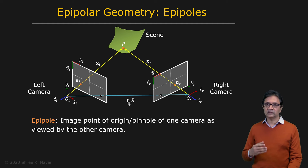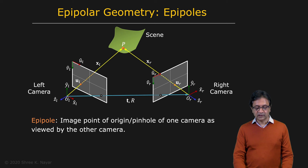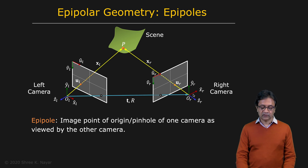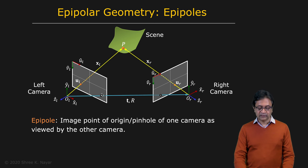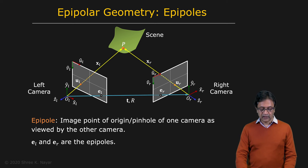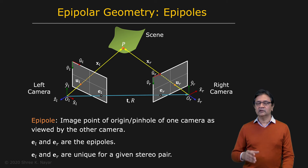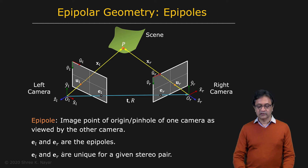The first concept to introduce is that of epipoles. The projection of the center of the left camera onto the right camera image, and the projection of the center of the right camera onto the left camera image — those are the epipoles of the stereo system, referred to as EL and ER. For any given stereo system, it has a unique pair of EL and ER.